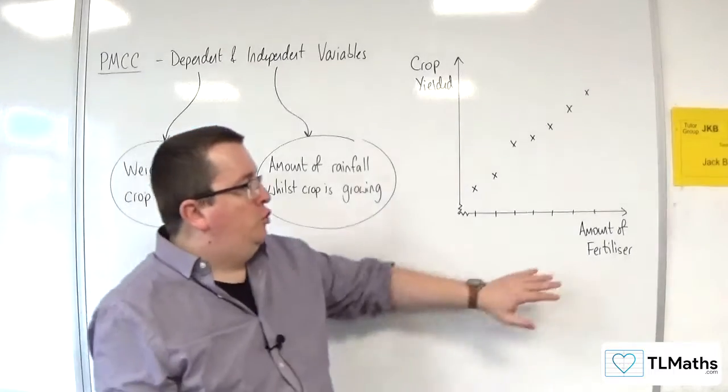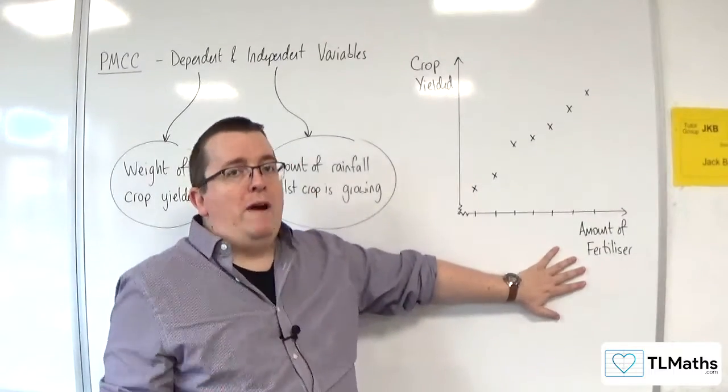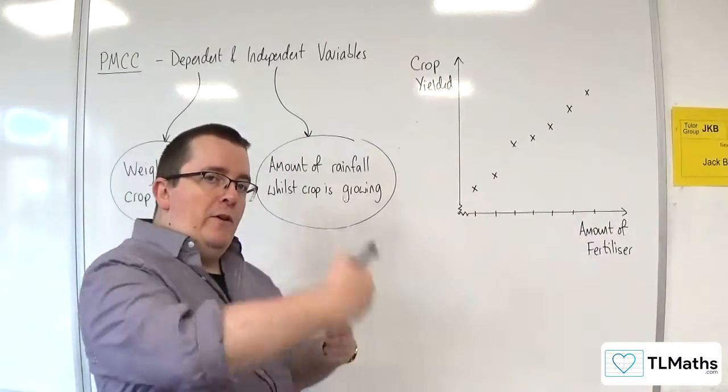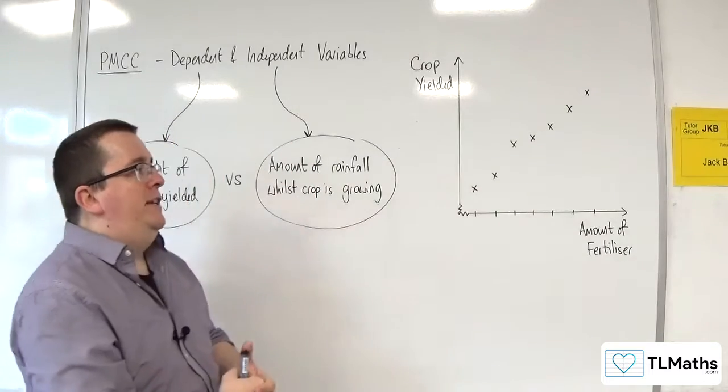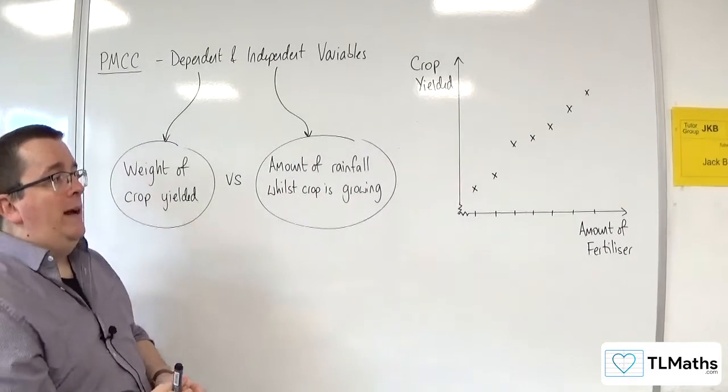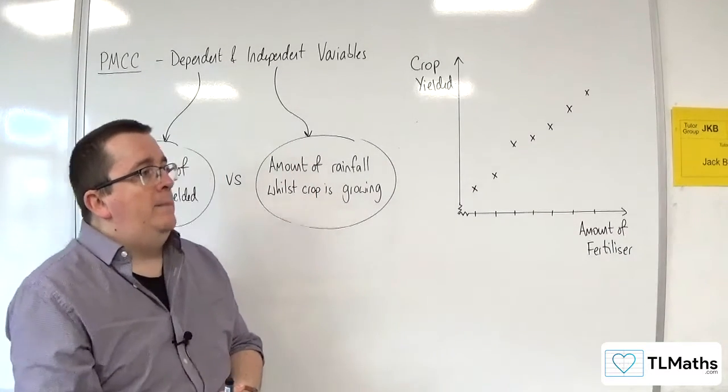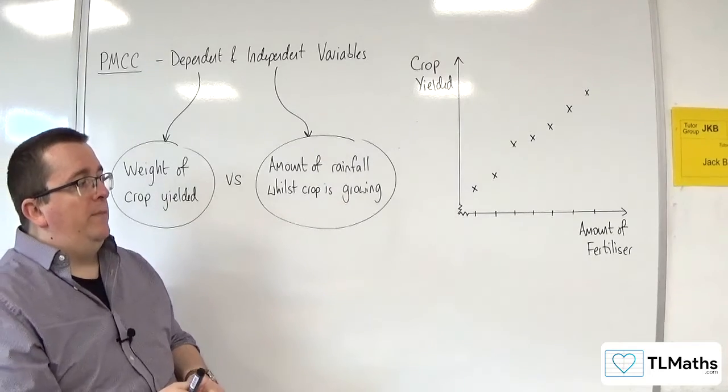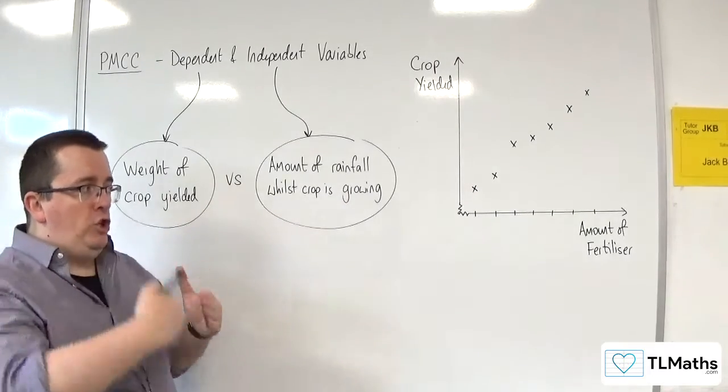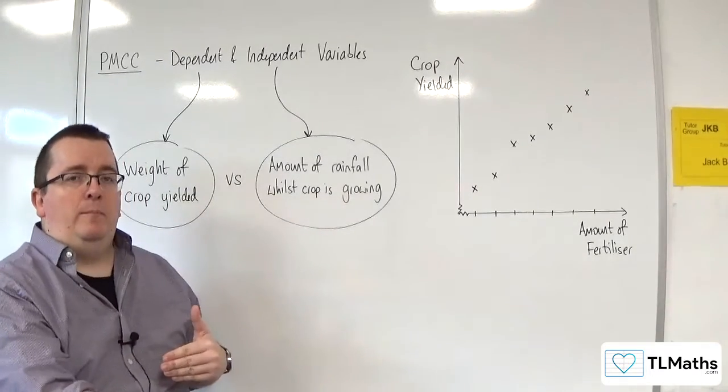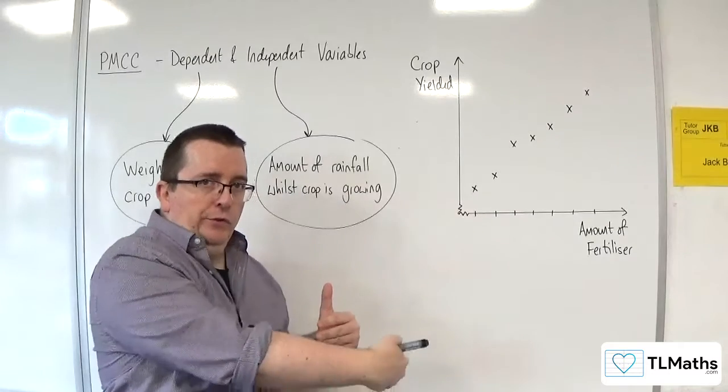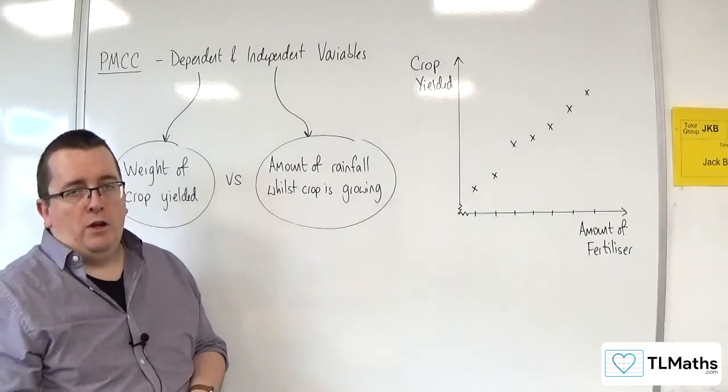So control variables are non-random variables. As you can see, they are appearing at regular intervals. And that's quite often when you have time as well. If you are timing something and you want to check on how much has been completed at regular intervals, that would also be a control variable.